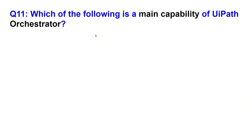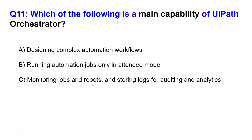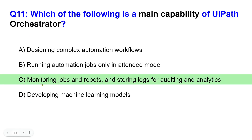Next question: which of the following is a main capability of UiPath Orchestrator? Option A: designing complex automation workflows. Option B: running automation jobs only in attended mode. Option C: monitoring jobs, robots, and storing logs for auditing and analytics. Option D: developing machine learning models. Please comment your answer for question 11. The right answer is option C.